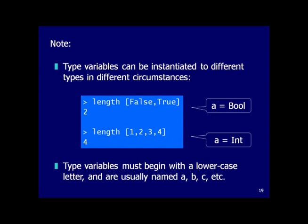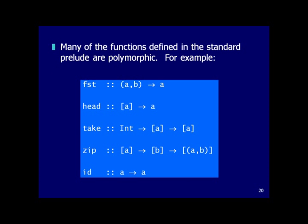Just like in C#, you can apply `length` to lists of different types — `length [True, False]` or `length [1, 2, 3]` — because the length function works on arbitrary lists and always returns an integer. The trick is that in Haskell, type variables start with a lowercase letter so you know the type is polymorphic.